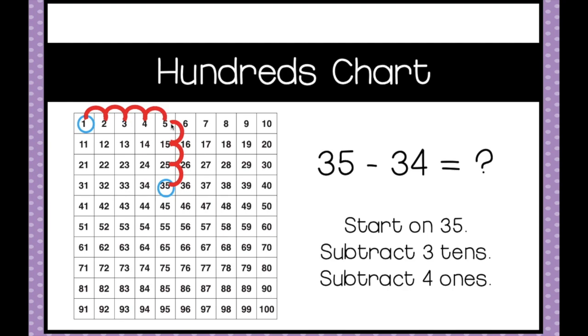And now we're going to subtract the 4 ones. 1, 2, 3, 4. So 35 minus 34 equals 1.